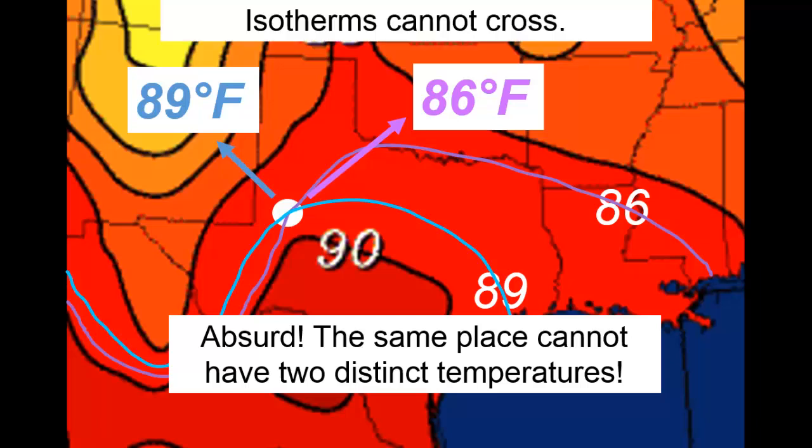Therefore, we conclude that two isotherms of distinct temperatures can never ever cross.